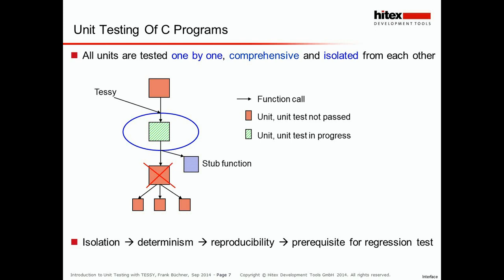The second advantage of isolation to the calling function is that you can use any arbitrary test data. This is especially important if you have defensive programming and the calling function does not pass a null pointer to the test object. But the test object itself checks if a pointer passed to it is a null pointer. During system testing you will never achieve the situation where a null pointer is passed to your test object. During unit testing it is very easy to generate a test case where a null pointer is passed and you can see if your test object behaves accordingly.